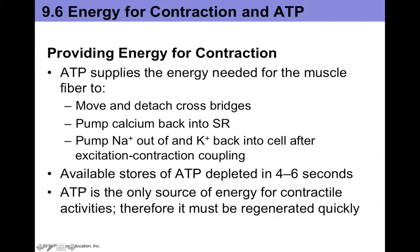Available stores of ATP are actually depleted within about four to six seconds of vigorous muscular activity. Our cells don't have a lot of ATP within the cytoplasm because these molecules are fairly unstable — ATP can spontaneously dissociate and break apart, meaning you can lose this energy if it's not used quickly. This is why ATP stores are depleted fairly rapidly in the early stages of muscle contraction.